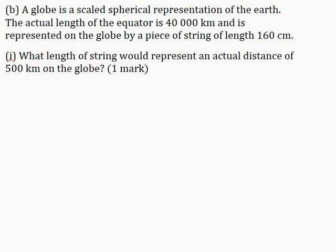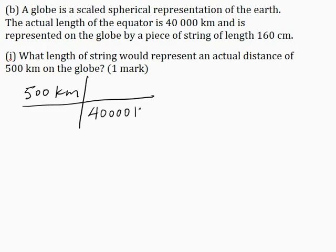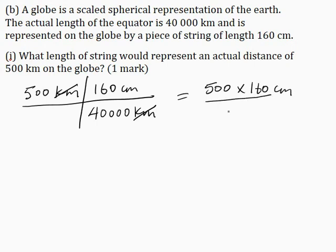Part B: A globe is a scale spherical representation of the Earth. The actual length of the equator is 40,000 km and is represented on the globe by a piece of string of length 160 cm. Part 1: What length of string would represent an actual distance of 500 km on the globe, for one mark? Using the ratio: 500 multiplied by 160 cm divided by 40,000 gives 2 cm.